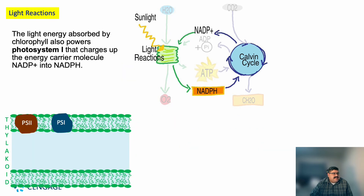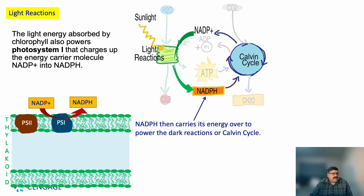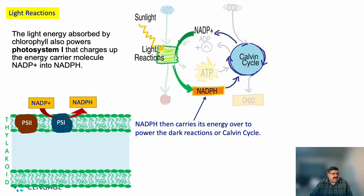In Photosystem I, the light energy absorbed by chlorophyll also powers the charging of the energy-carrying molecule NAD+ into NADPH. NADPH then carries its energy over to power the dark cycle, or the Calvin cycle.